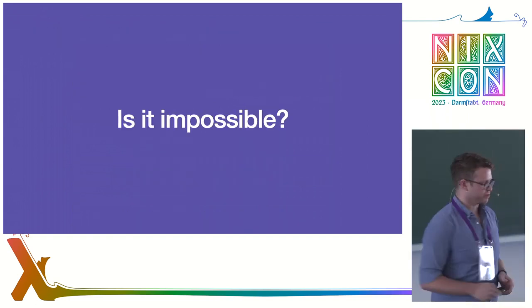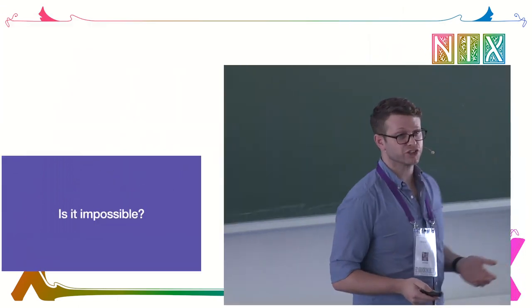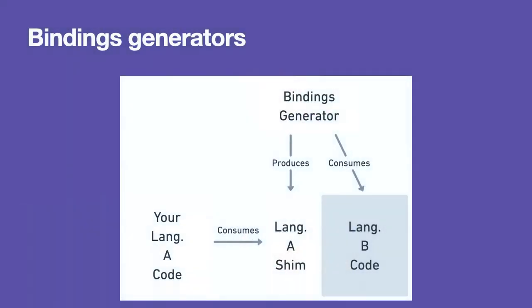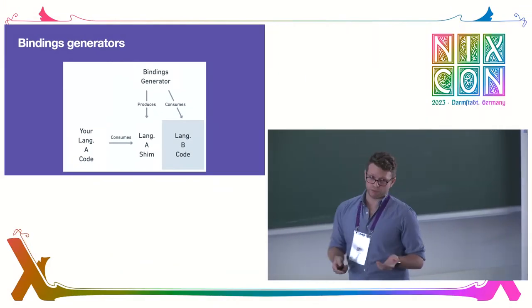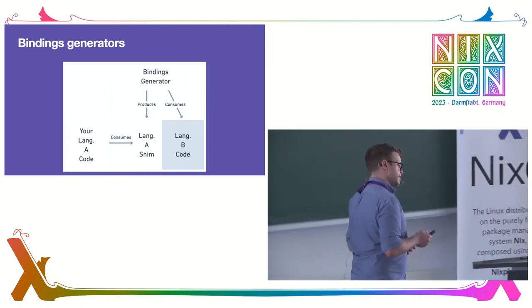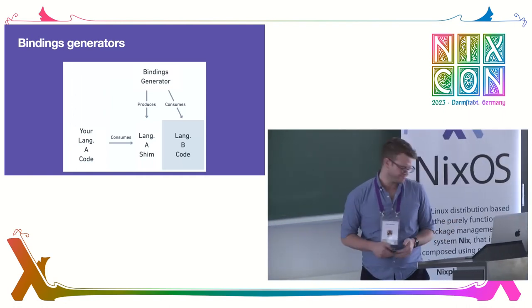So, is it impossible? Obviously not — I'm standing in front of you. How do you do it? You chain some poor tortured soul to a chair and force them to write a bindings generator. Basically, the bindings generator reads in your language B code — Nix in this case — and generates a shim in the language you're writing in — Rust. Your code then consumes that shim. This necessarily means language A and language B must already have some way of communicating, which is often through a C API. As York said yesterday, C has been around since 1970 and people use it a lot.